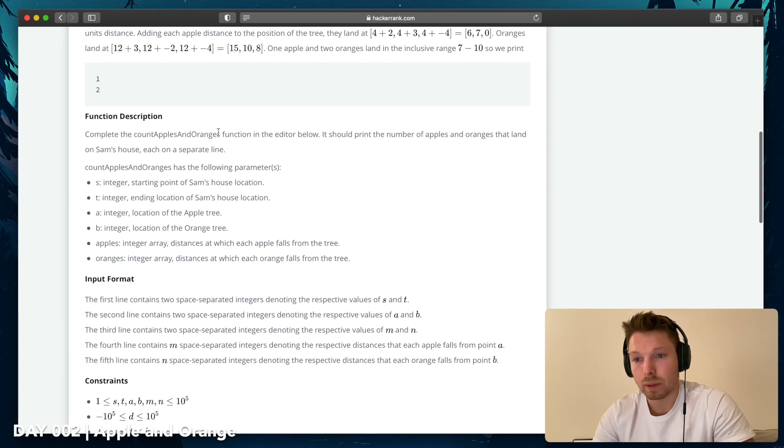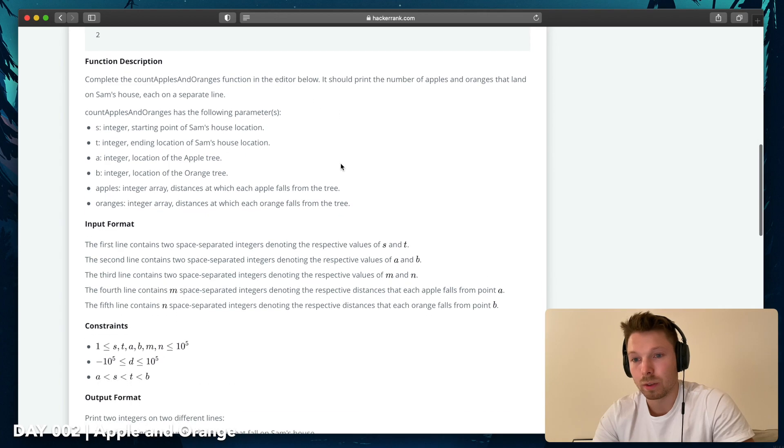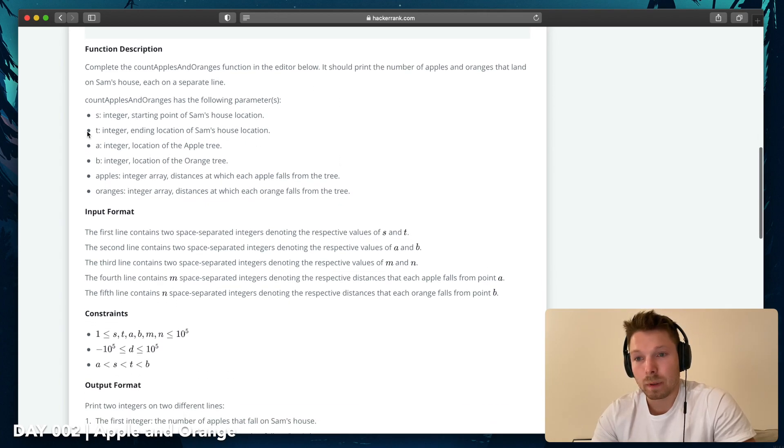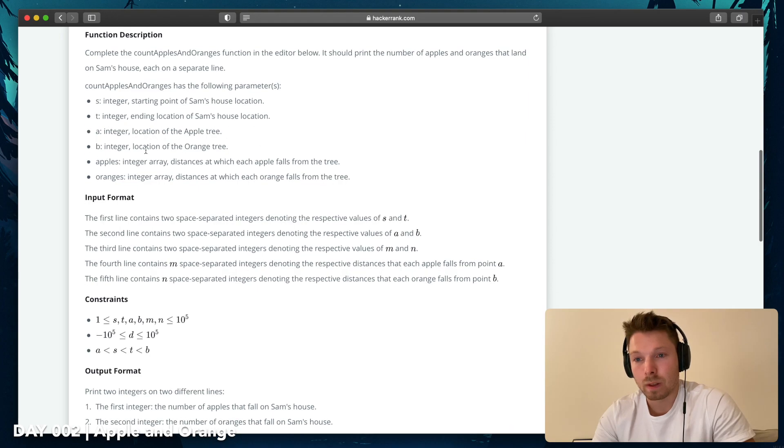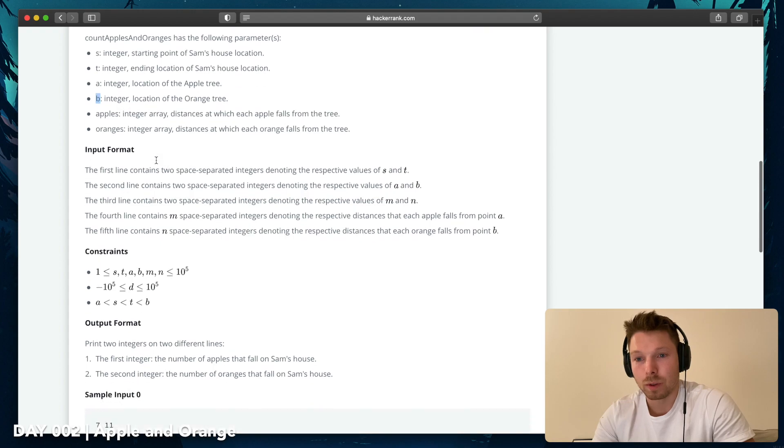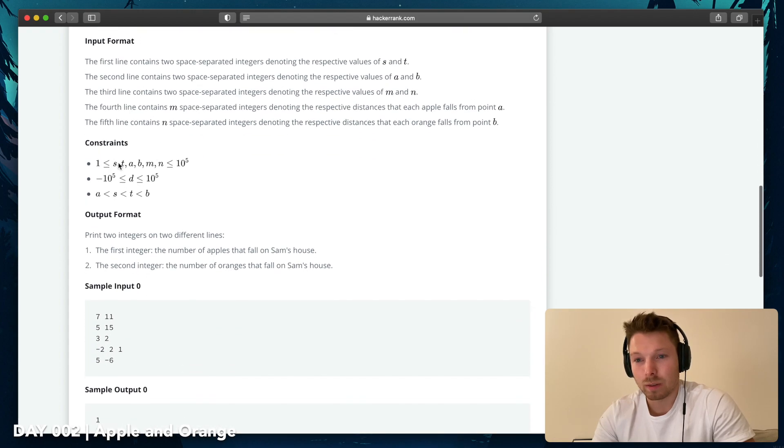Complete the count apples and oranges function in the editor. Starting point T, that's the difference. Apple, oranges, why not O? Constraints: all of them is up to a million. I think five means like five zeros. And D, the distance can be between minus a million and plus a million. And A is smaller than S, S is always smaller than T, and T is always smaller than B. That makes sense.